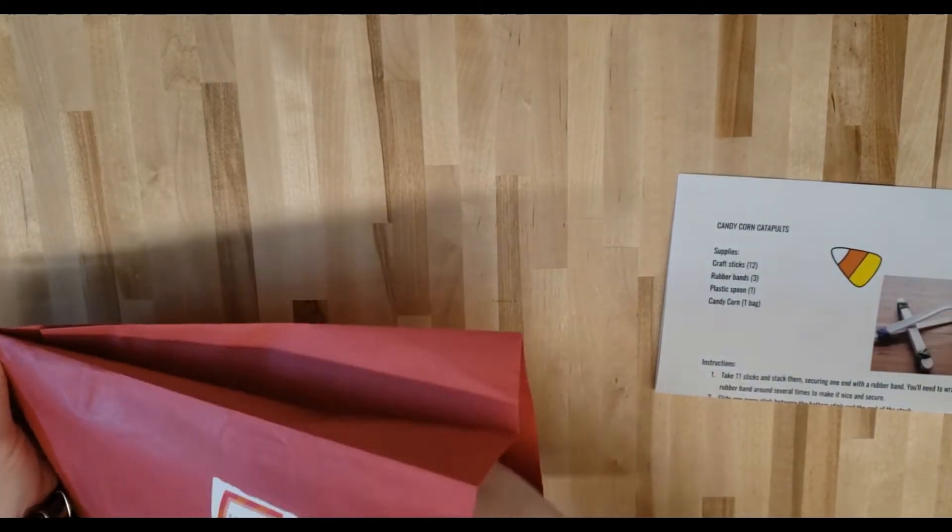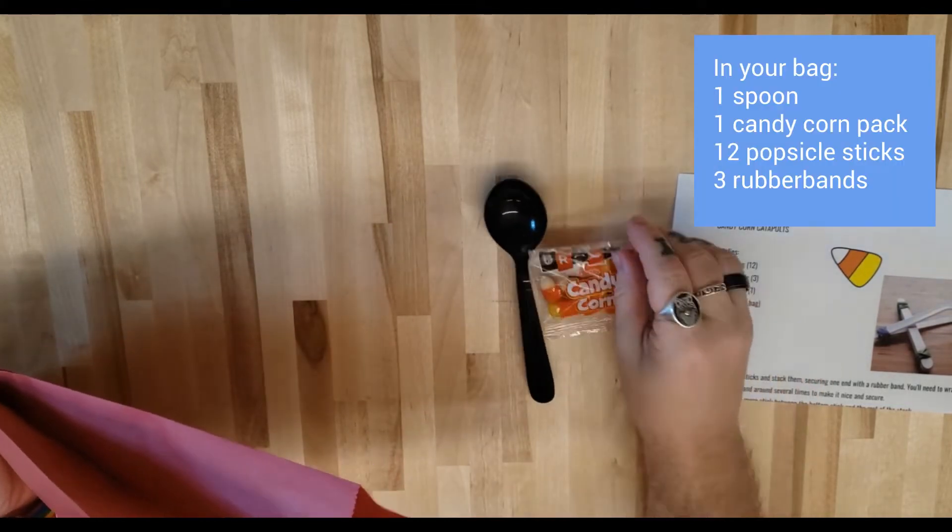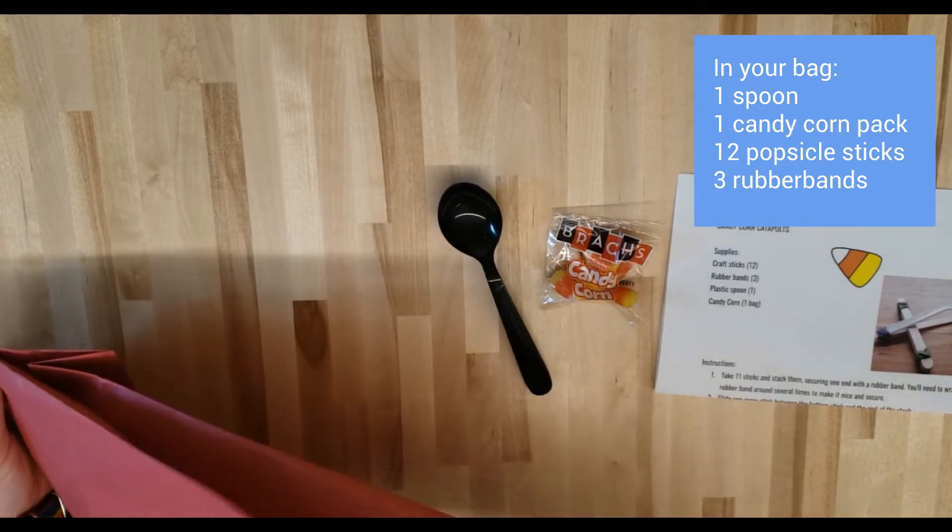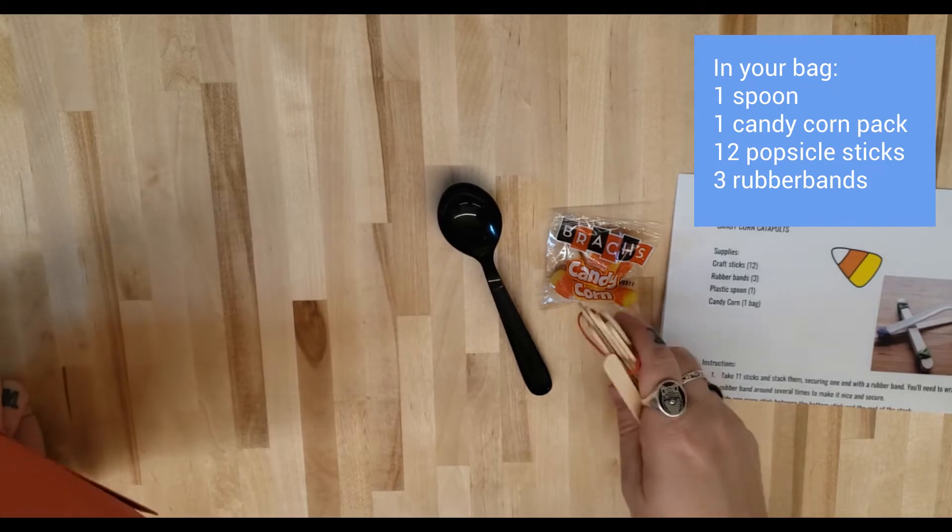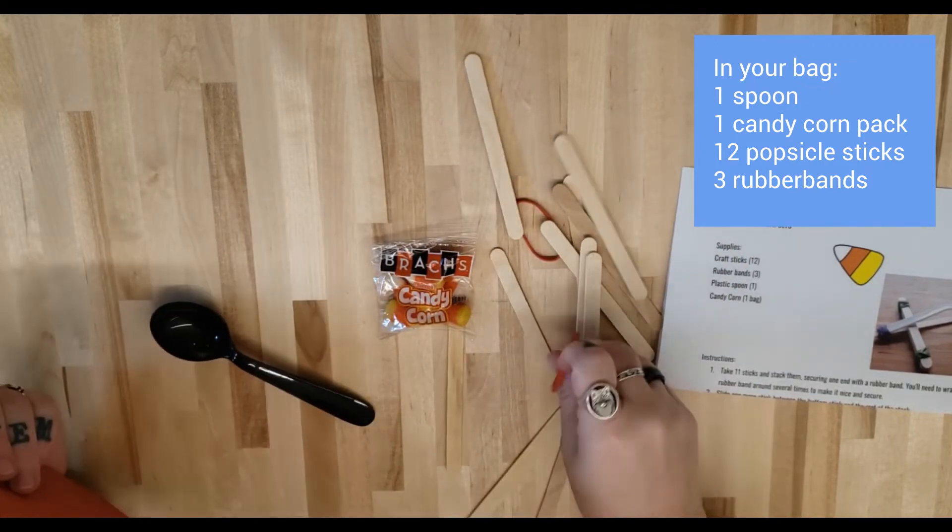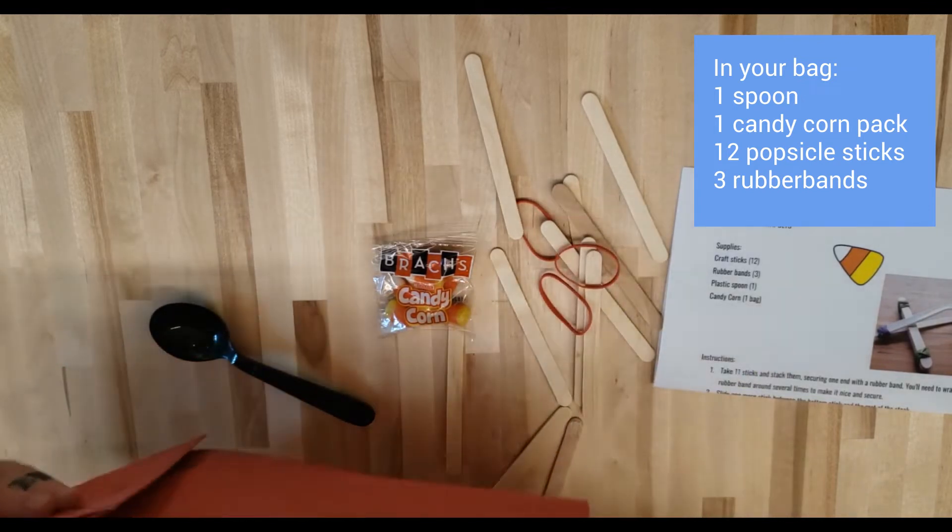You're going to have a plastic spoon, a candy corn bag, don't eat these yet, gotta do the experiment first. You're going to have 12 craft sticks and one, two, three rubber bands.